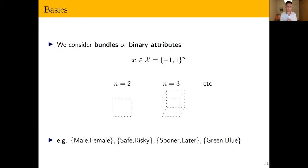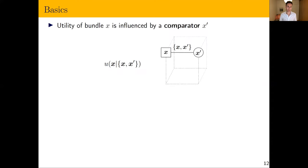Now the formal model. We consider a world where people are making judgments about or choosing between bundles of binary attributes. There are n different attributes, each can be 1 or −1, so with two attributes you'd have a square, with three a cube, and so on. Attributes could be things like male/female, safe/risky, sooner/later, or green/blue. The utility function is not defined just over the attribute being considered — it's influenced by a comparator x′. Every time you consider x, some other x′ enters your judgment, so we write utility as depending on both x and this comparison x′.